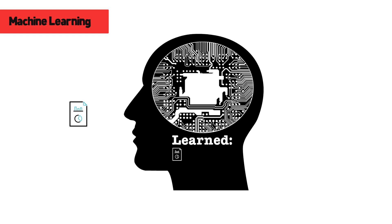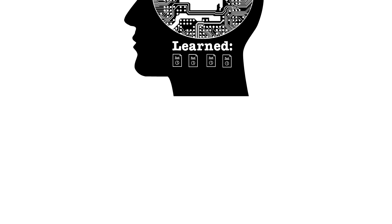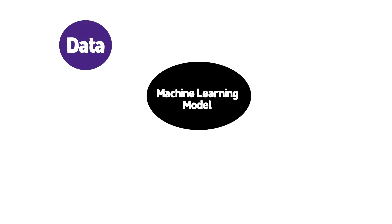Each piece of information that is learned feeds into the machine learning model in a continuous cycle of output and retraining. There are three important components to a machine learning model, and they include data, algorithm, and training.